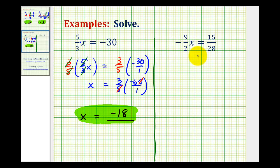Let's take a look at our second example. Here we have negative nine-halves x equals 15 twenty-eighths. Again, our goal is to isolate x on one side of the equation, so we'll have x equals some number or some fraction.